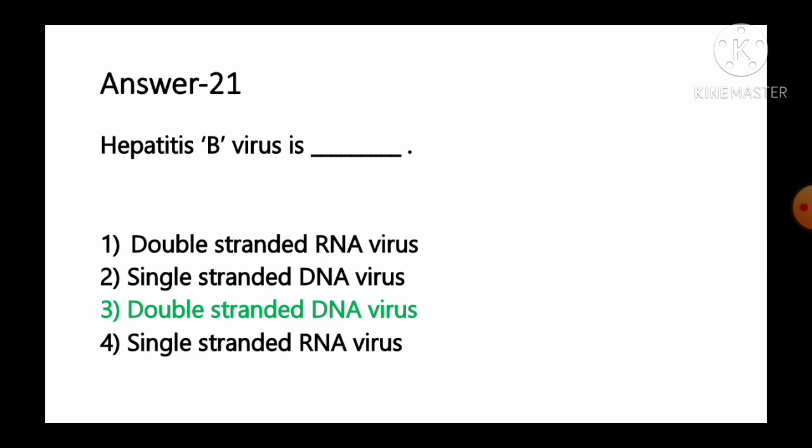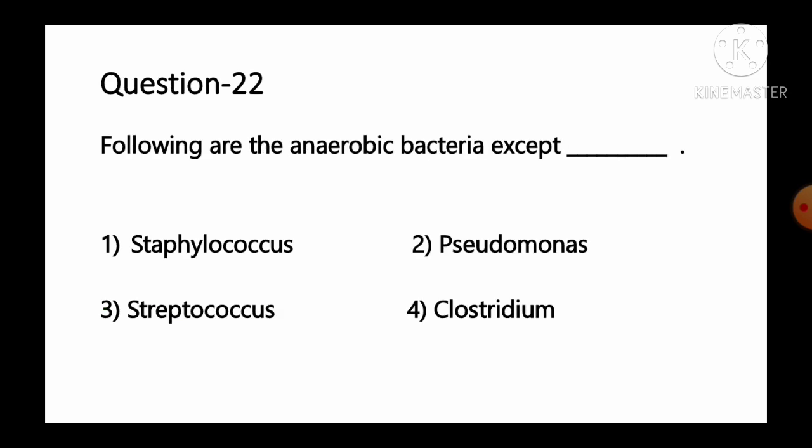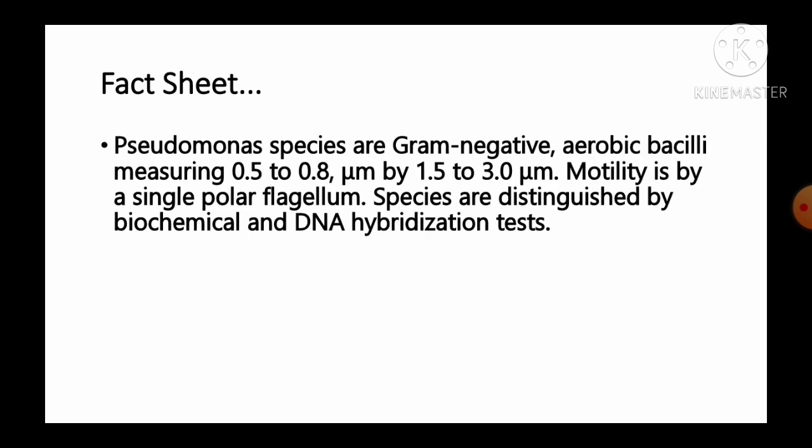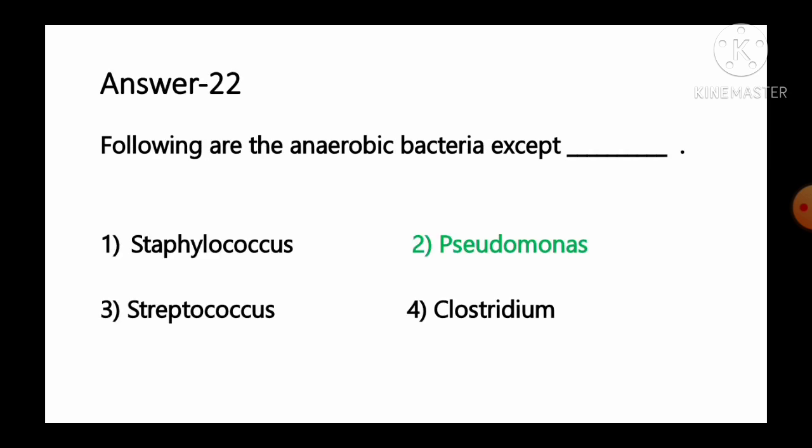Question number 22: Following are anaerobic bacteria except — option 1 Staphylococcus, option 2 Pseudomonas, option 3 Streptococcus, option 4 Clostridium. Pseudomonas species are gram-negative aerobic bacilli measuring 0.5 to 0.8 by 1.5 to 3 micrometers, with motility by a single polar flagellum. So Pseudomonas is an aerobic microorganism, while Staphylococcus, Streptococcus, and Clostridium are anaerobic. Option number 2, Pseudomonas, is the correct answer.